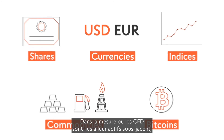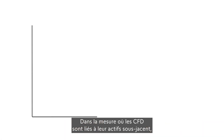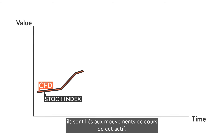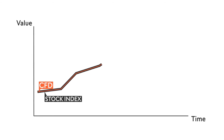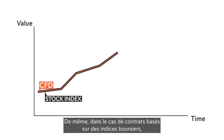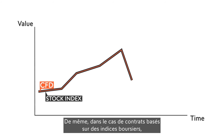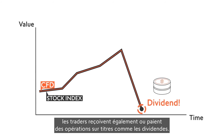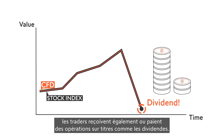Because CFDs are linked to their underlying asset, they are linked to the price movements of that asset. Similarly, in the case of contracts based on stock indices, traders also receive or pay corporate activities such as dividends.